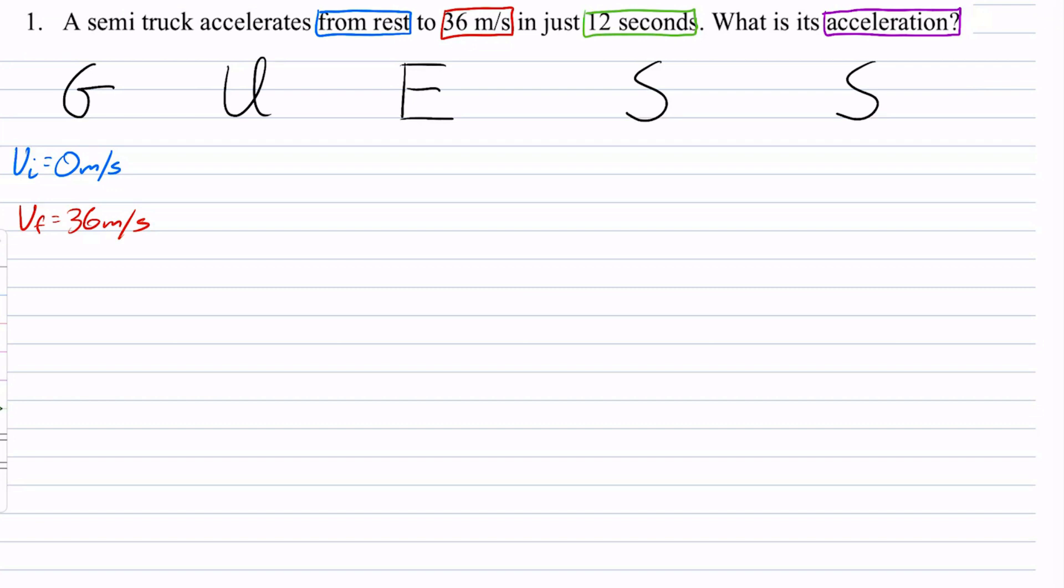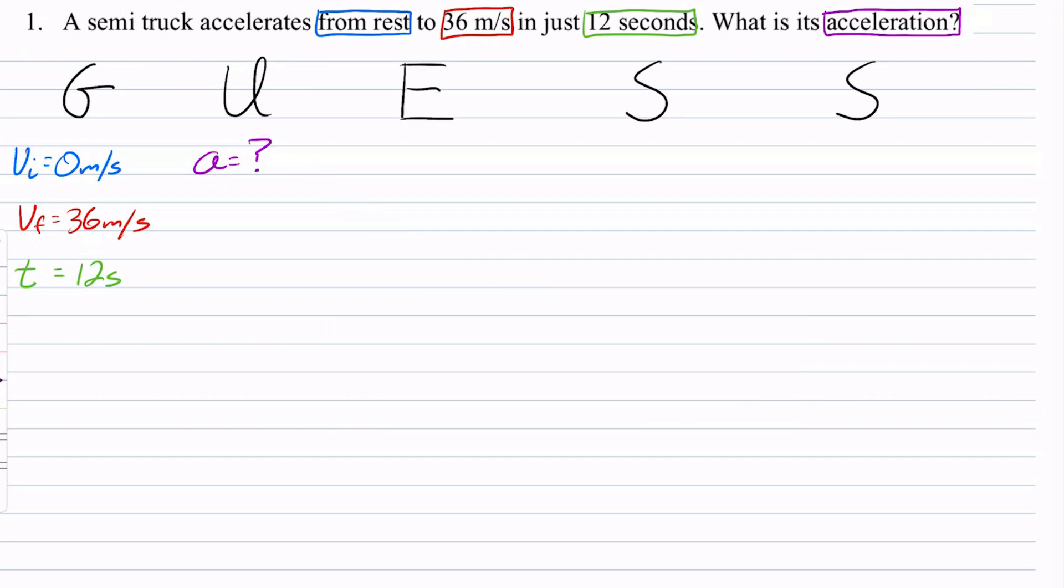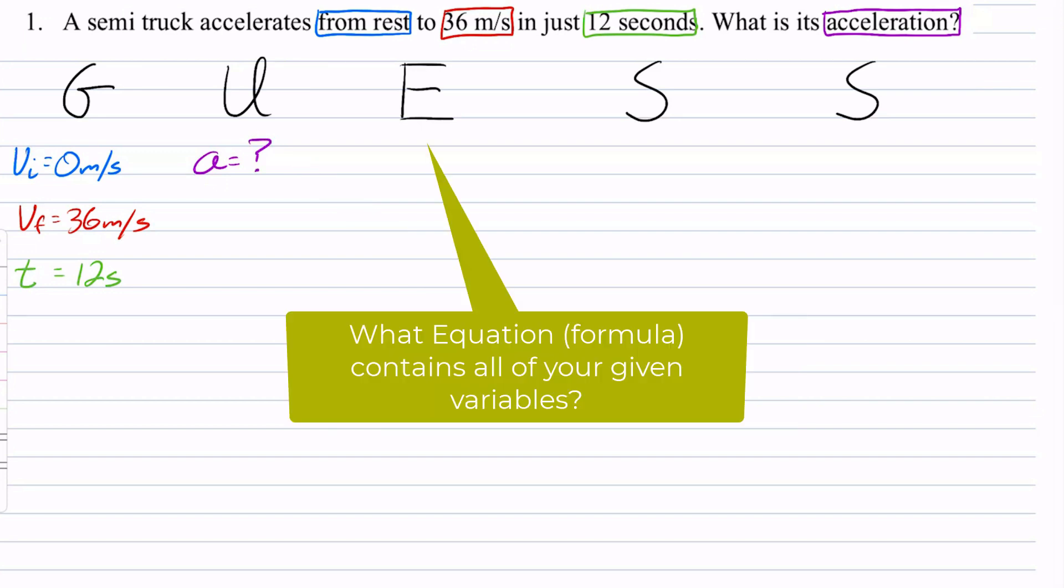And the truck does this. It changes its velocity from 0 to 36 meters per second over a time of 12 seconds. So my unknown, my U, is going to be acceleration. Because that's what I'm solving for. That's what I don't know yet.